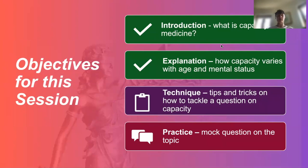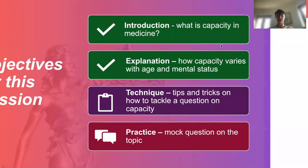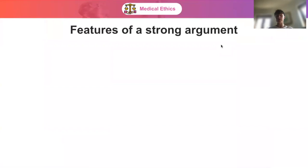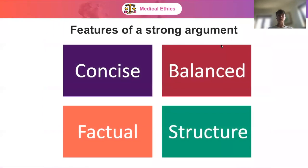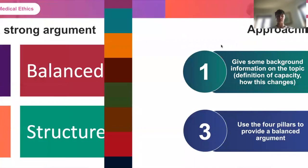We've looked at capacity in medicine and how capacity varies with age and mental status. Now we're going to look at some tips and tricks on how to tackle a question on capacity. A strong argument is concise, balanced, factual, and structured — we need to keep these in mind whenever we're thinking about an answer to an ethical question.